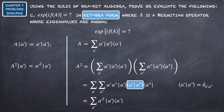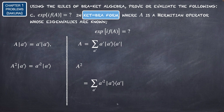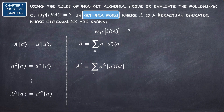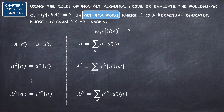We can proceed further and see that the eigenvalue equation for A^N acting on |a'⟩ results in the eigenvalue a'^N times |a'⟩. The ket-bra form of A^N is then the summation over a' of the eigenvalue a'^N multiplied by the projection operator |a'⟩⟨a'|.